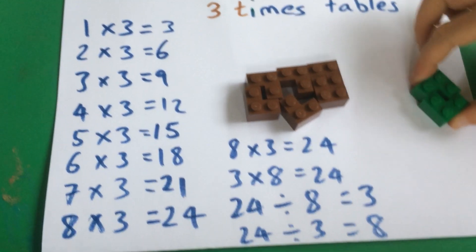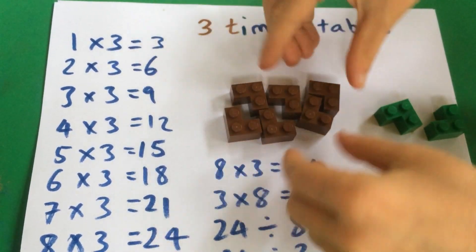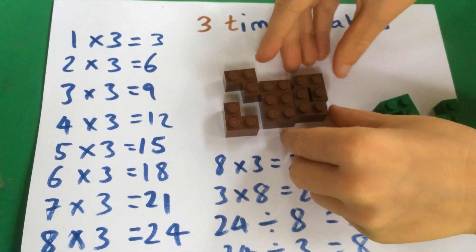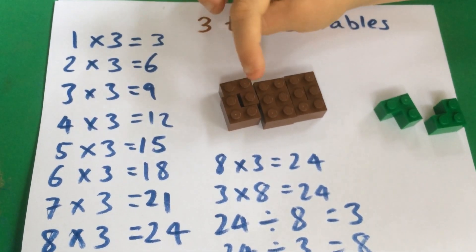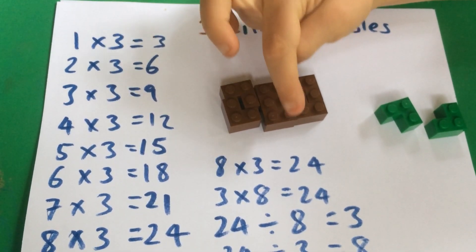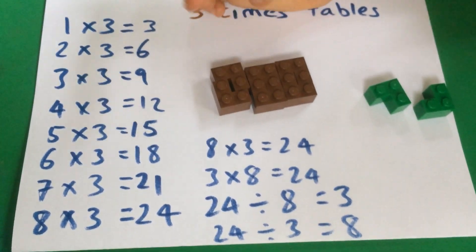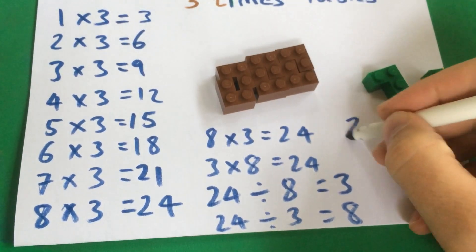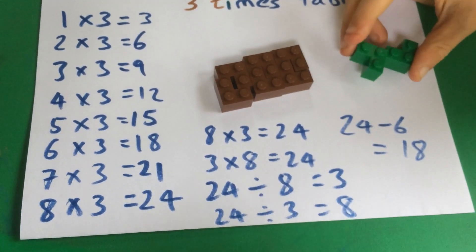If you took away the green one, then we've got 6 blocks, but we've got 1, 2, 3, 4, 5, 6, 7, 8, 9, 10, 11, 12, 13, 15, 16, 17, 18 stumps. So you did some subtraction there as well. 24 minus 6 is 18.